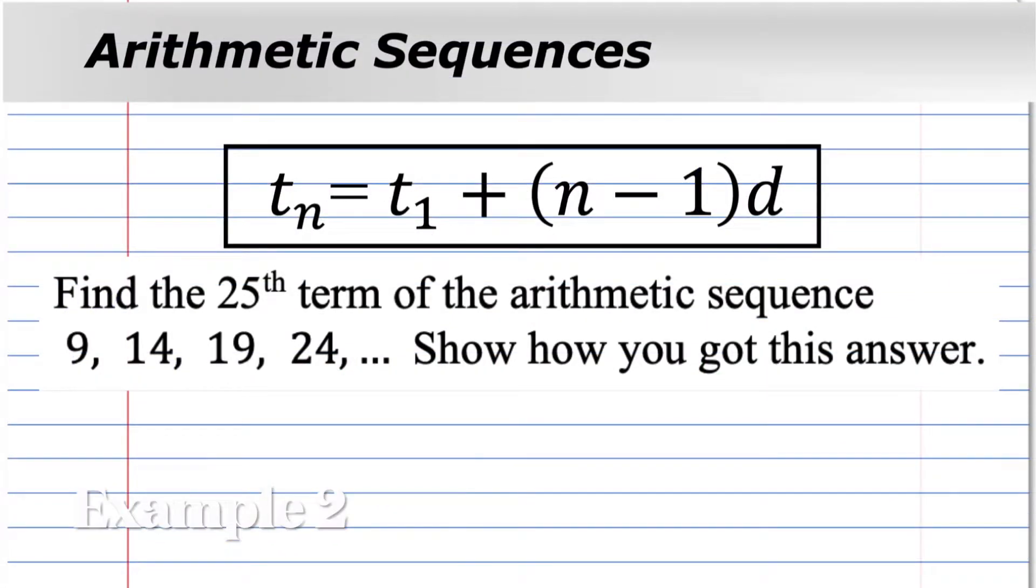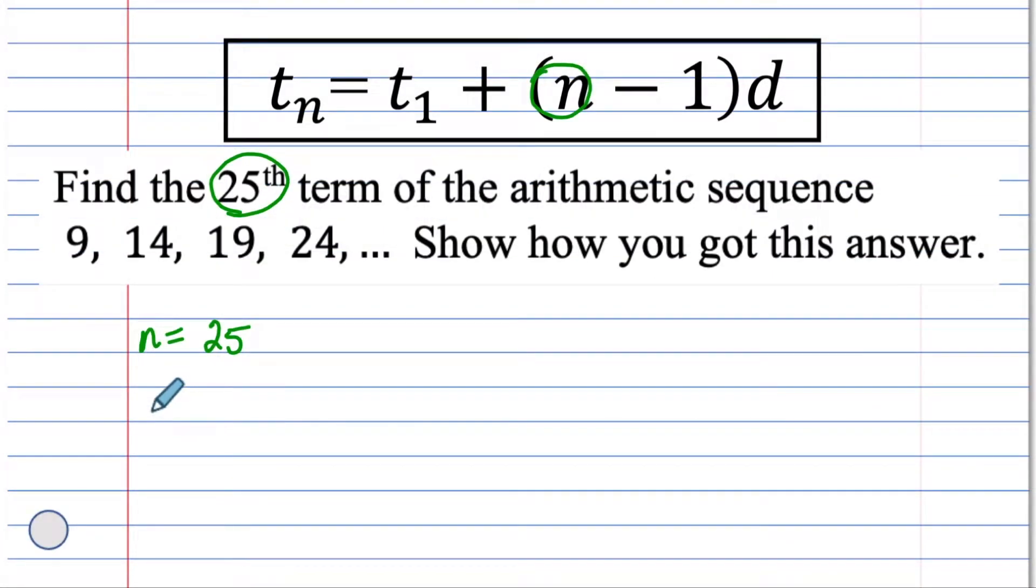Find the 25th term of the arithmetic sequence and show how you got this answer. Now you have to start thinking about, what does 25th term mean? We want to find that value. We want to find this amount at 25. When the input is 25, what is that value? What's the output?